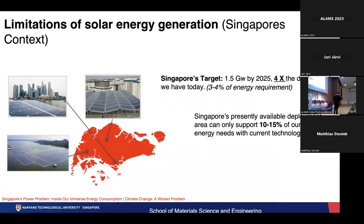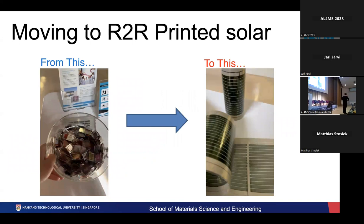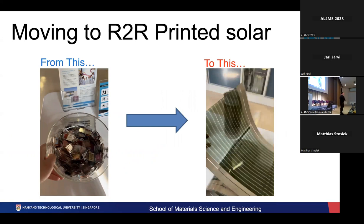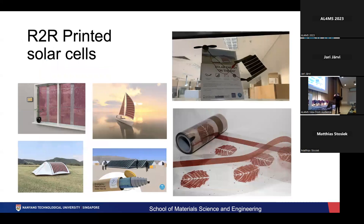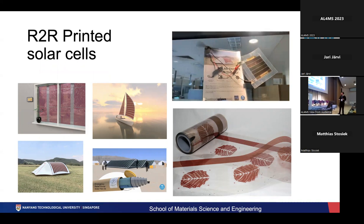Even if we took all the available deployment areas in our country, we are going to be able to support only 10% to 15% of our total energy needs at the current state of technology. What I posit is that I spent the past two years in Australia working with a flexible PV team trying to do this — we want to be able to print out our solar cells in a roll-to-roll manner, a more advanced form of printed electronics, something we're going to be able to wrap around buildings, put into our furniture, wrap around pipes, and build new structures for emergency power relief.